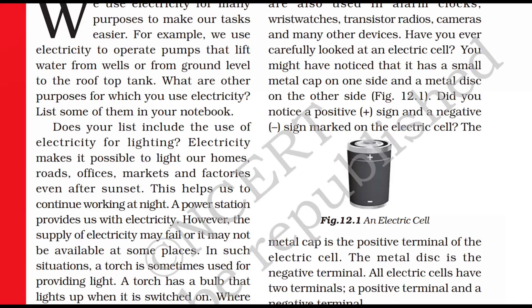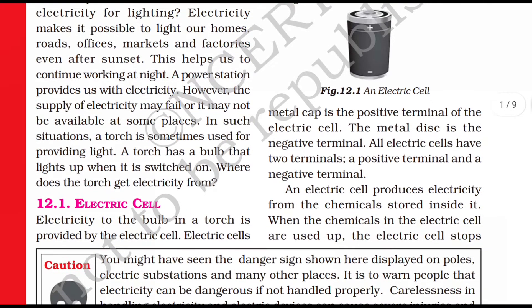Have you ever carefully looked at an electric cell? If not, you can observe one now. You might notice a small metal cap on one side and a metal disc on the other side. You will also see a plus sign and a minus sign marked on it. The metal cap is the positive terminal and the metal disc is the negative terminal. All electric cells have two terminals - a positive terminal and a negative terminal.